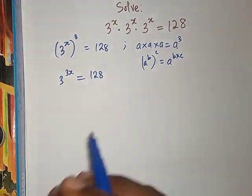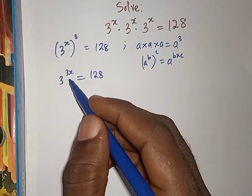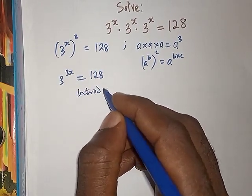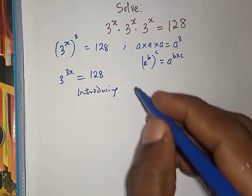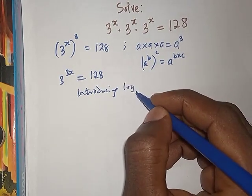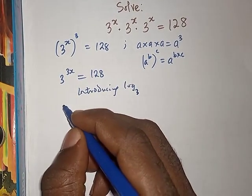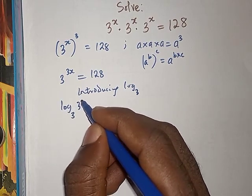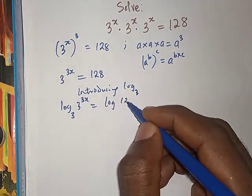The next thing we are going to do here is that we are going to bring this power 3x down by introducing log of base 3 to both sides. So we're going to have log base 3 of 3 to power 3x equals log base 3 of 128.